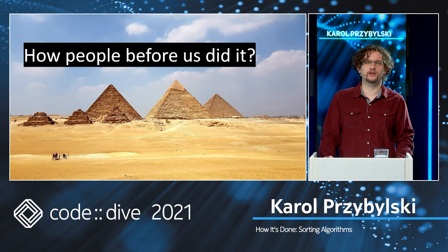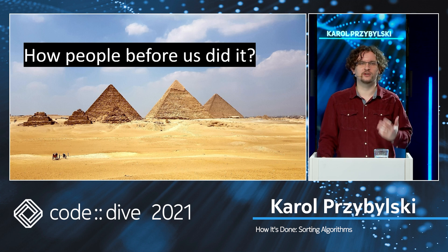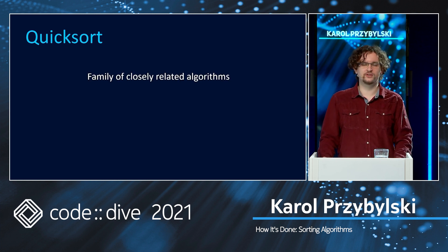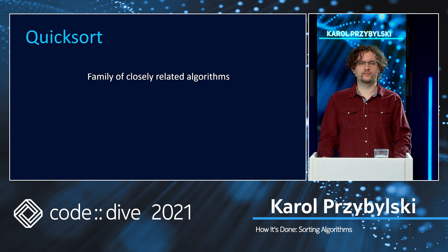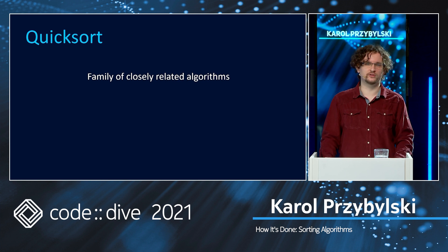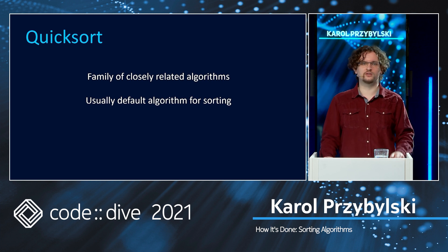We are now ready to answer the second question: how did people before us do it? What can we learn from our ancestors? Our ancestors were sorting arrays using Quicksort. Quicksort is actually not a single algorithm but a family of closely related ones, because the various implementations have some differences — like the scheme of choosing a pivot while sorting. So there is not a single version of Quicksort; there are a lot of them, but the principles are the same. Quicksort is also the default algorithm in many programming languages like C++, C, or Java. Average performance is N log N and average space complexity is the same.